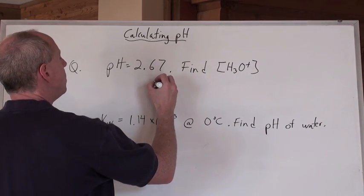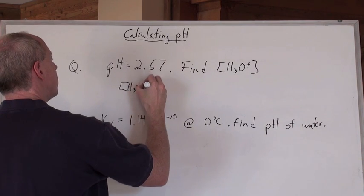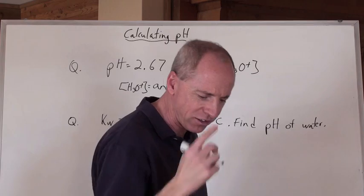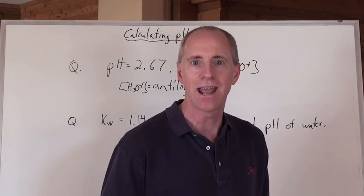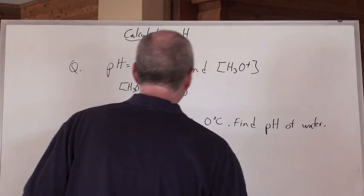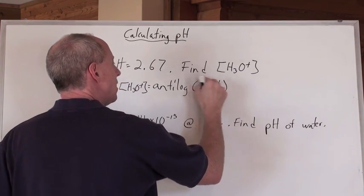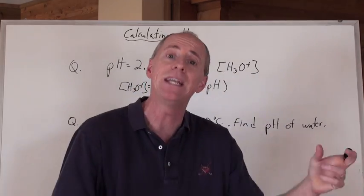The formula is going to be that the hydronium ion concentration in solution equals the anti-log. Now you're going to say, well, isn't that the inverse log or the second function log? Yeah, in your calculator it is, but it's called the anti-log. The anti-log of the negative pH, I like to put that in brackets, negative pH, because I want to tell you that you can't punch in the pH and then make it a negative, it's a negative pH.